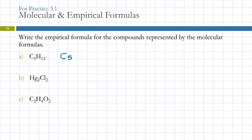C5H12, what is the empirical formula for that? You can't reduce 5 to 12. There's no common factors except 1, and dividing by 1 doesn't change it. The empirical formula is the same as the molecular formula. How about Hg2Cl2? HgCl.